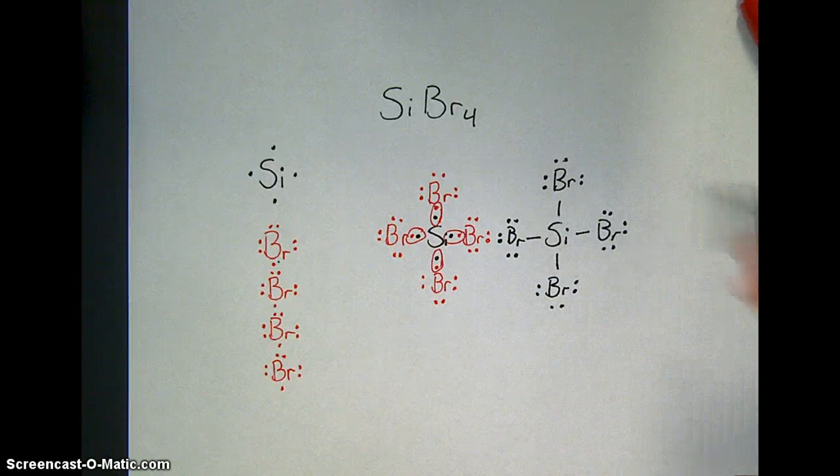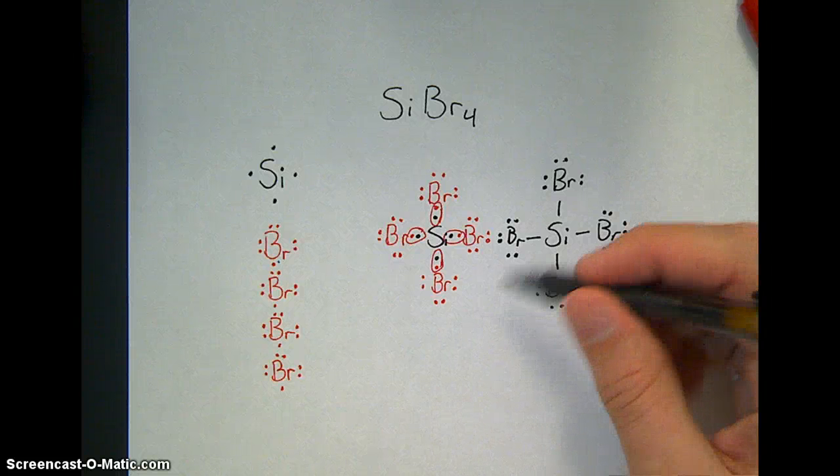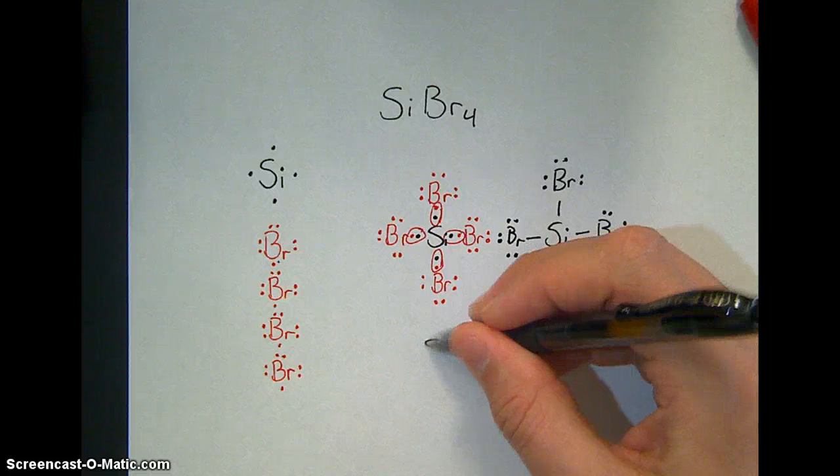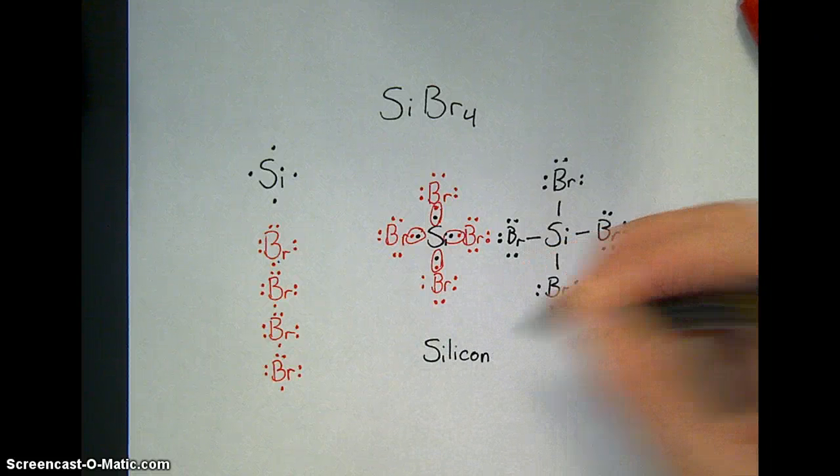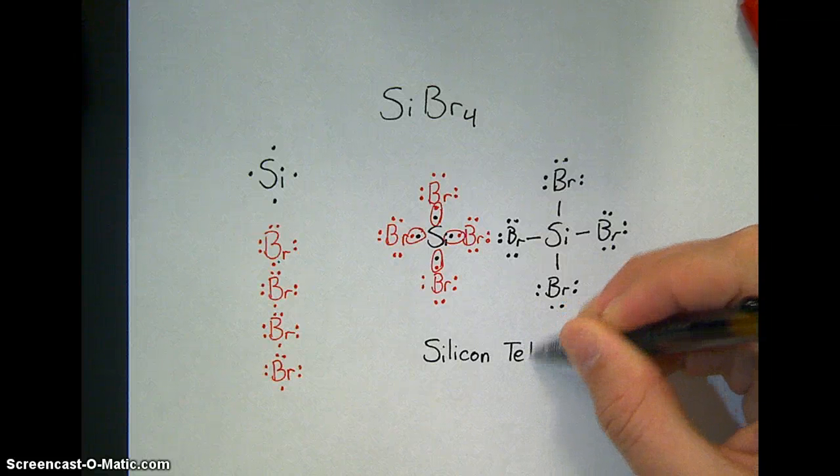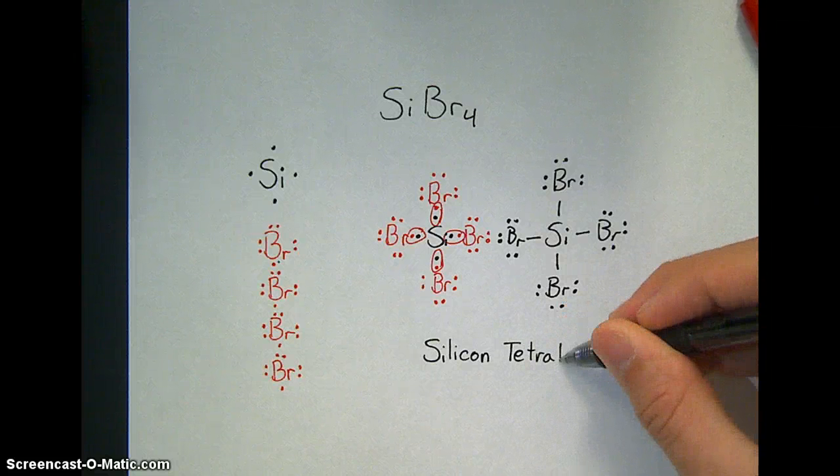To name this, because it's a covalent compound, we're going to use its prefixes and the number of atoms present. So there's one silicon. So I have silicon. And then four bromines. So four gets the prefix tetrabromide.